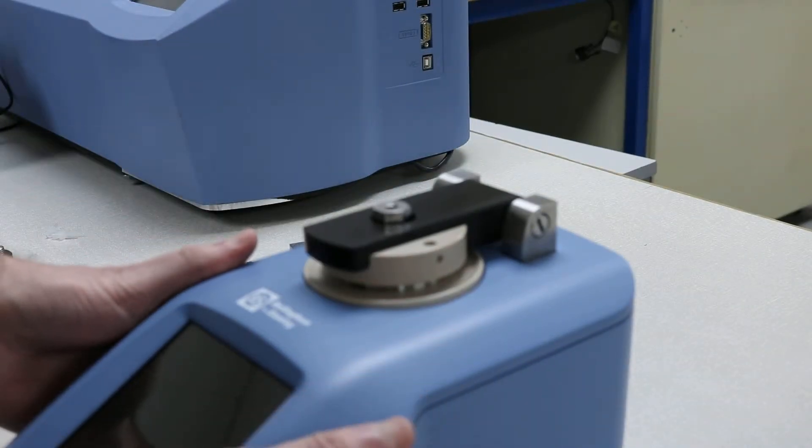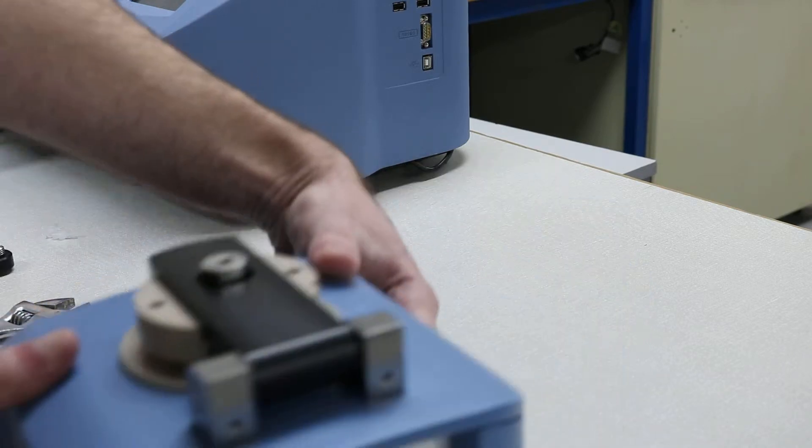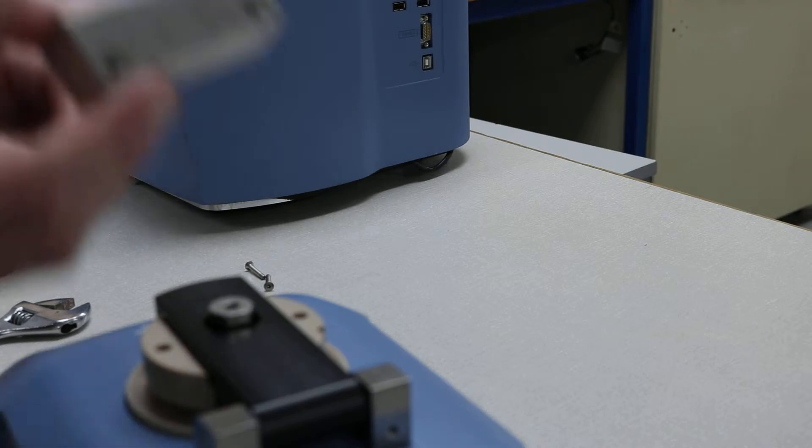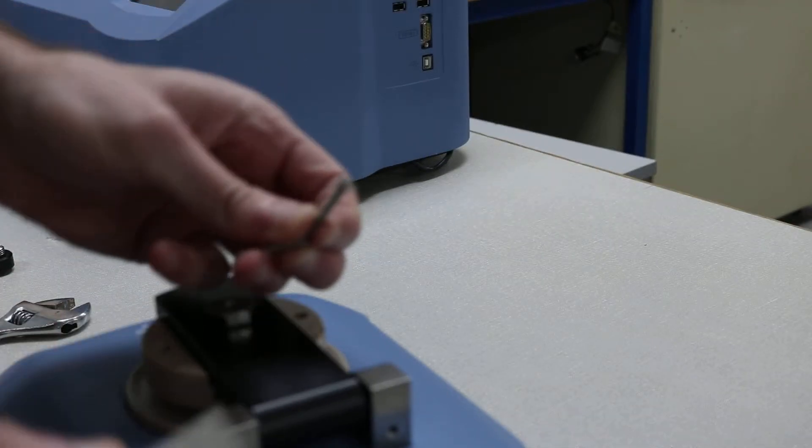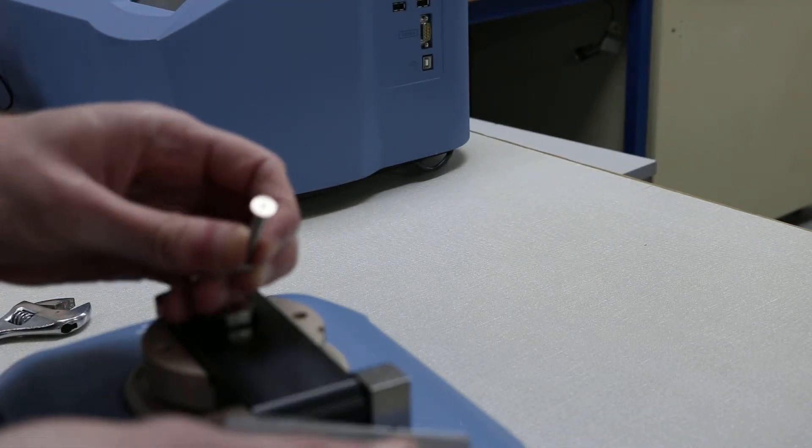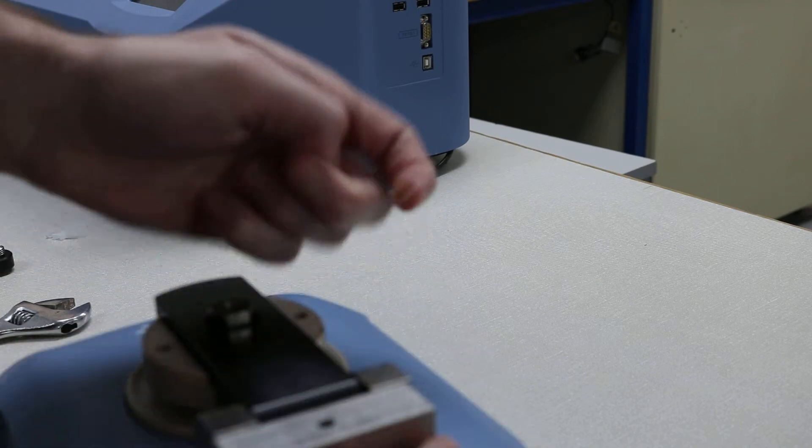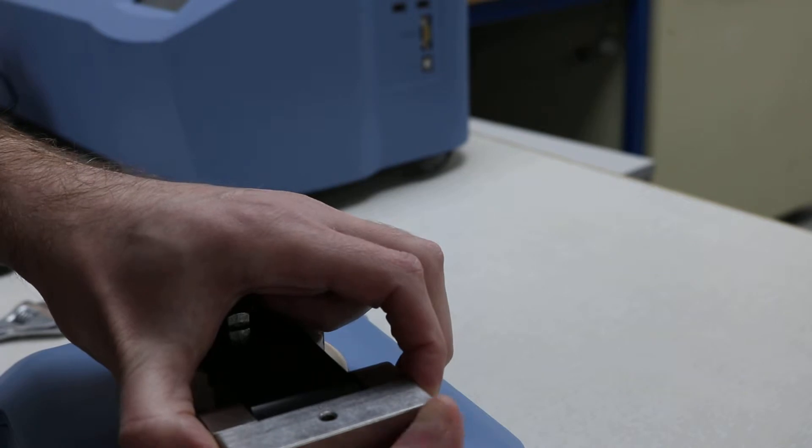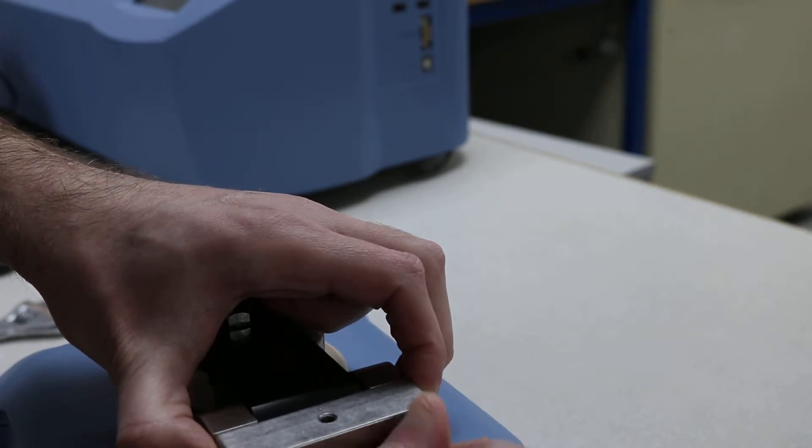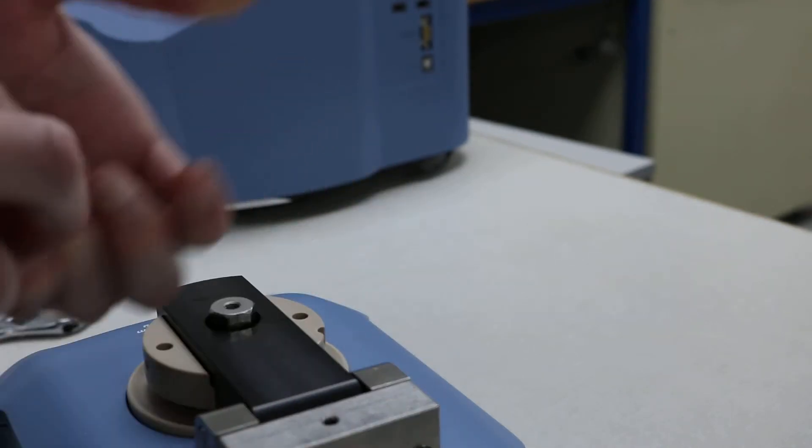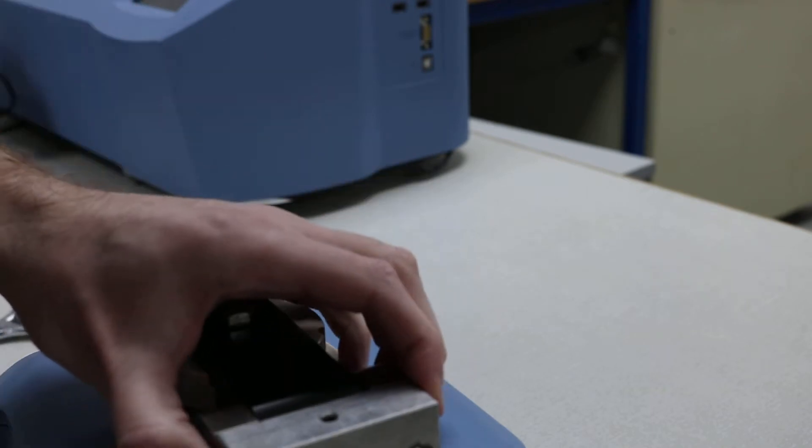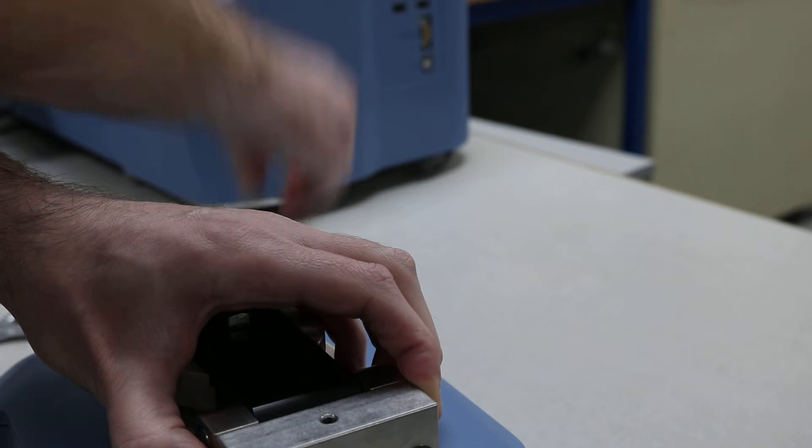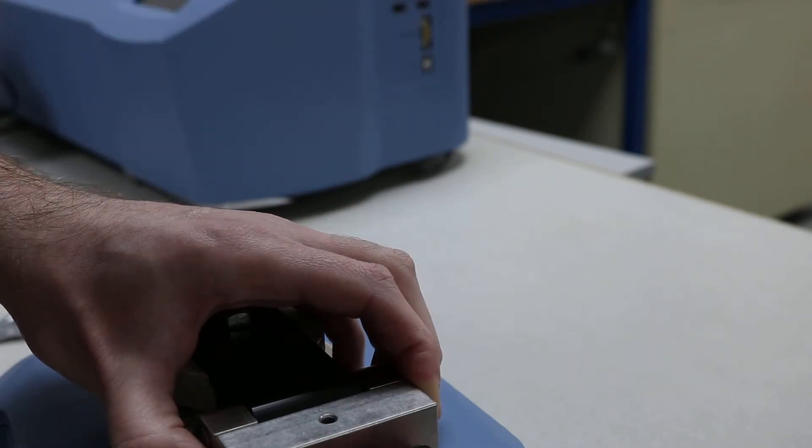The next step is to make sure the arm can be latched down. So you'll need the metal block and two screws and this fits on the back. Use an Allen key to tighten it all up.